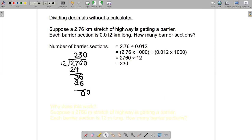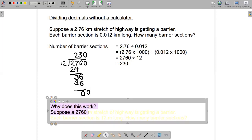Okay, we're going to have the same stretch of highway, the same length of barrier sections, but instead of kilometers, we'll talk about the problem in terms of meters. So what would that look like? Well, instead of a 2.76 kilometer stretch of highway, we've got a 2,760 meter stretch of highway. It's getting a barrier.